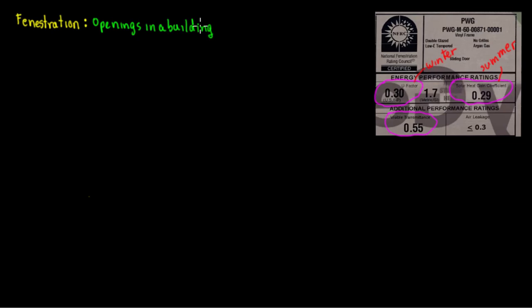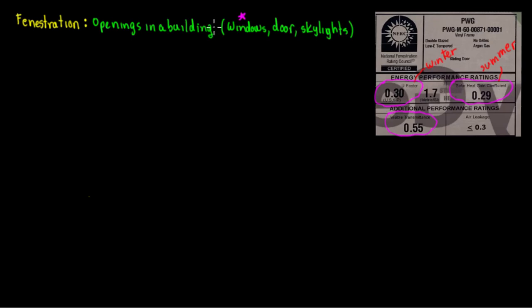So when we're saying openings in a building, what openings do we have? We're talking about windows, doors, and skylights. The reason fenestration is very important is because when you're doing a heat load calculation, windows bring a big heat load into the building because there is a lot of solar heat gain. That's why when we talk about fenestration, we mainly talk about windows, and then additionally doors and skylights.